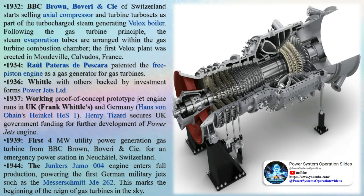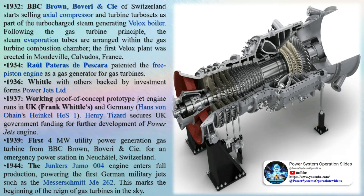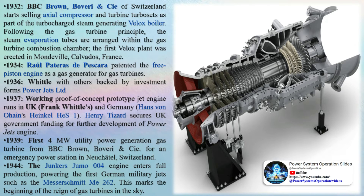In 1995, Siemens became the first manufacturer of large electricity-producing gas turbines to incorporate single crystal turbine blade technology into their production models, allowing higher operating temperatures and greater efficiency. In 2011, Mitsubishi Heavy Industries tested the first 60% efficiency combined cycle gas turbine — the M501J — at its Takasago, Hyogo works.